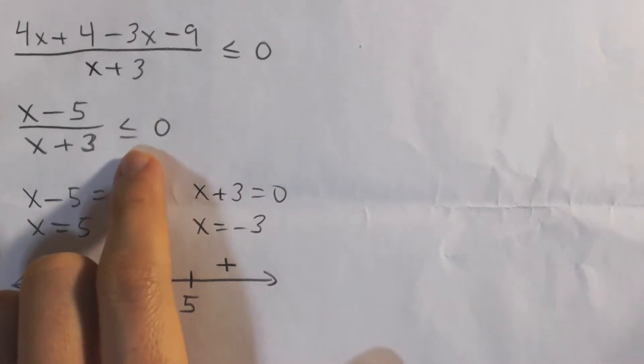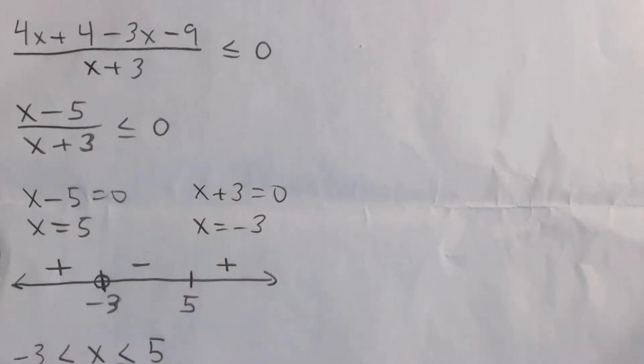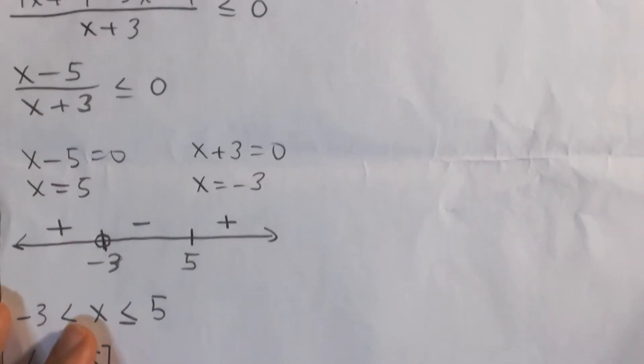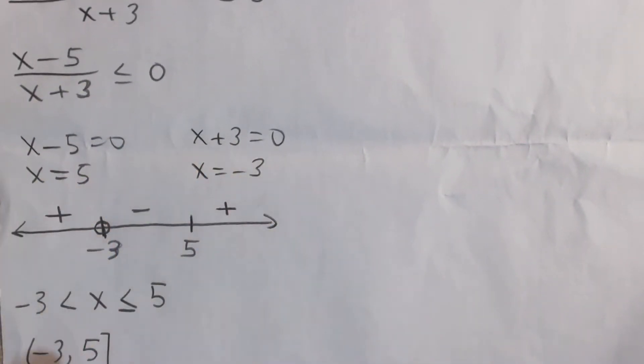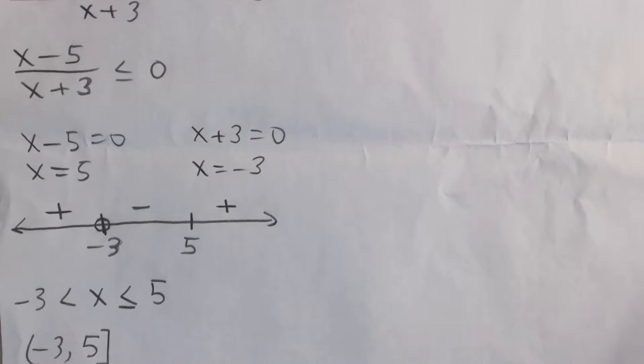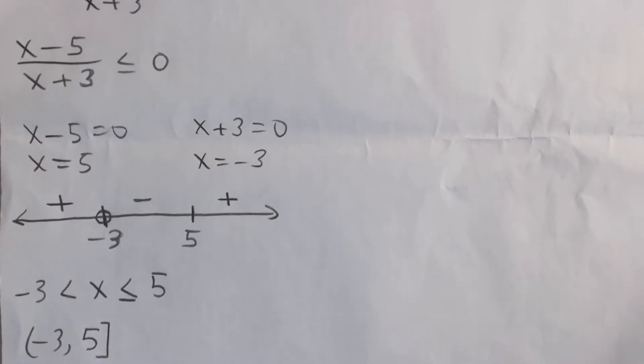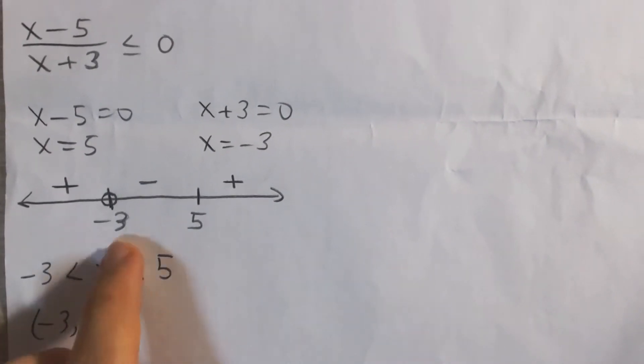We're trying to find when it's negative or 0, so we're trying to find where are those regions where it could be negative. And so we just solve pretty simple: x equals 5 and x equals negative 3. And so what we're going to do is plot those critical points on a number line, negative 3 and 5.